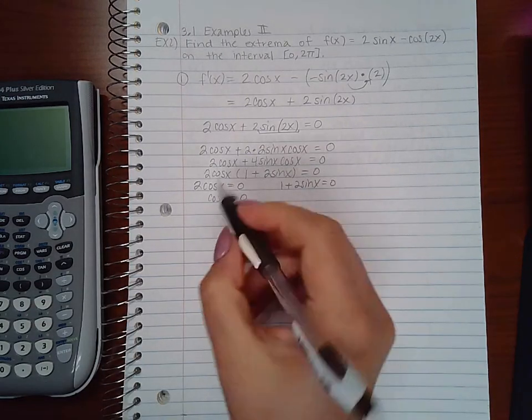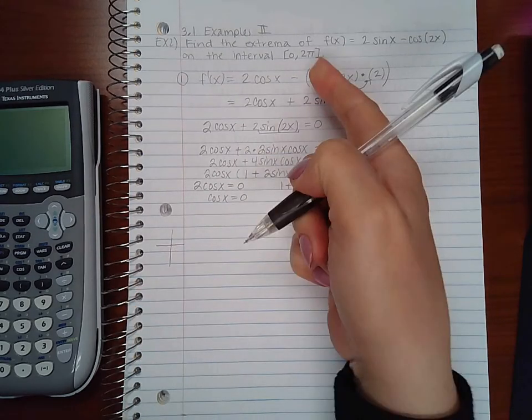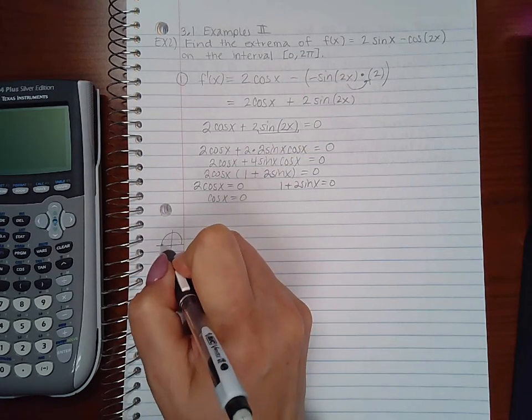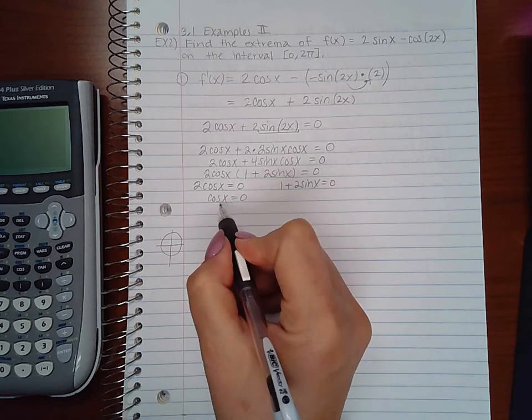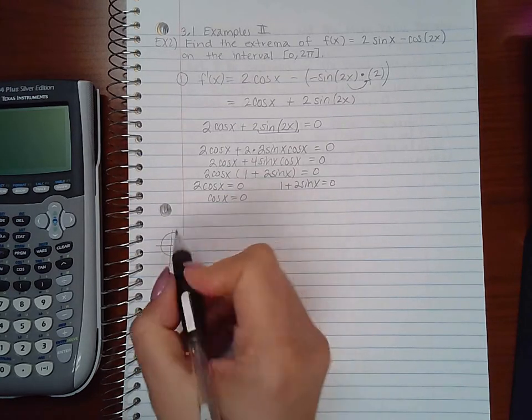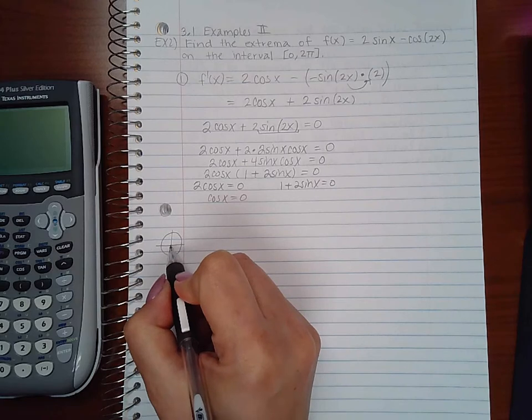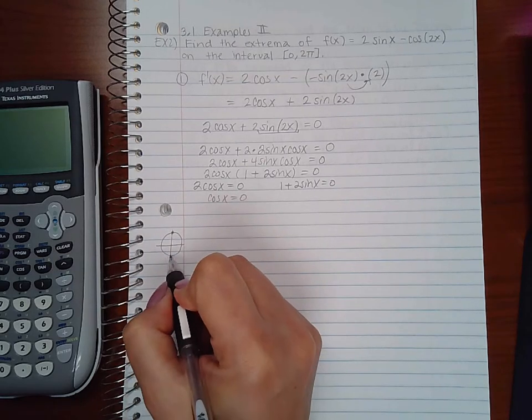And then if I take a look at my unit circle between 0 and 2π, that is the whole entire unit circle one time around. Cosine is the x value of the unit circle. So when is the x value equal to 0? That would be here and here.